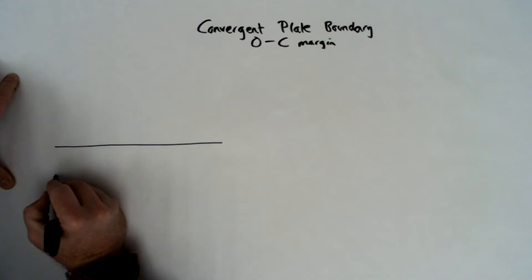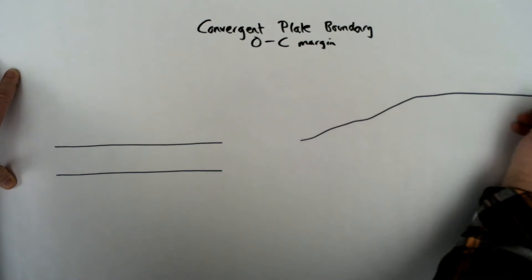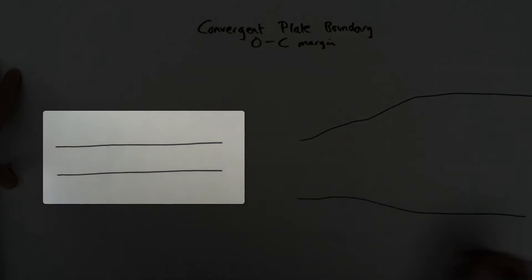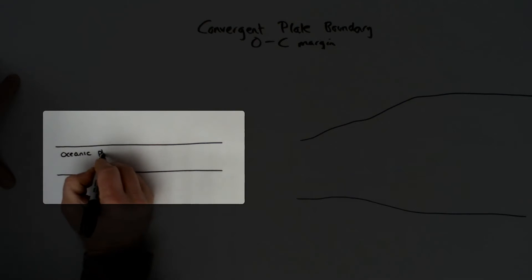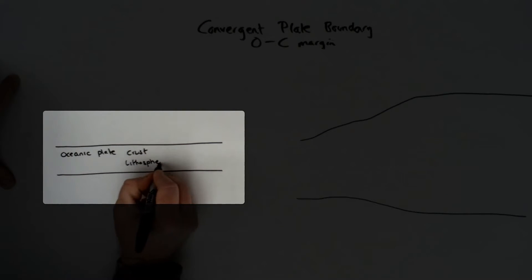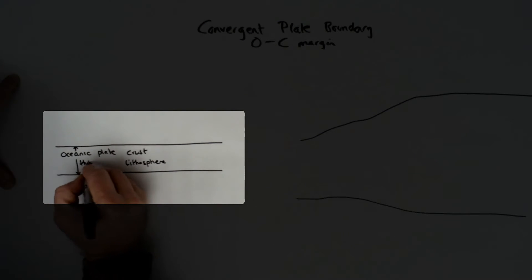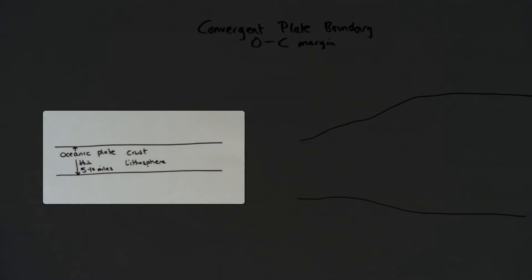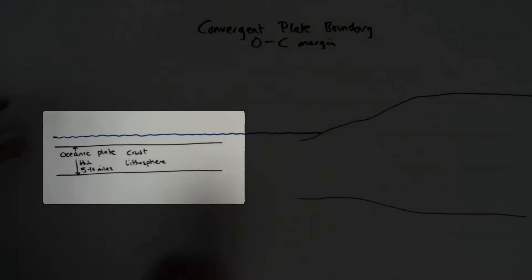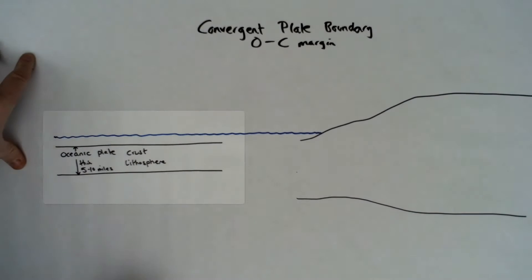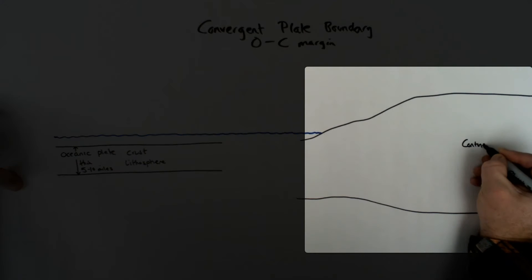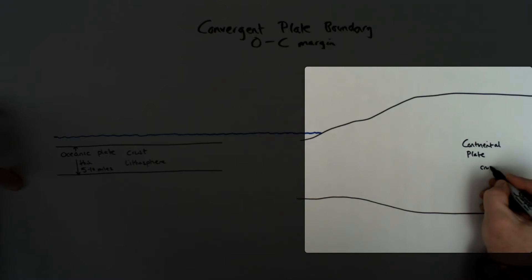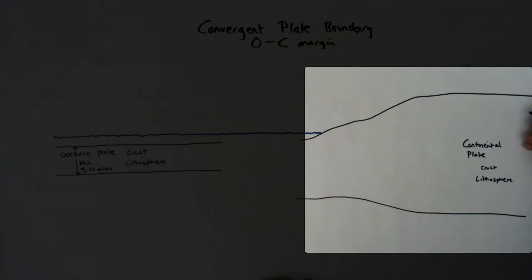This diagram is in the plate tectonics unit. I'm looking at today the convergent plate boundary which is oceanic converging with continental. Now these plates are different and they differ in thickness, composition, and density. This creates certain processes and features that occur at this boundary. The ocean plate is thinner, made of the crust and lithosphere. The continental plate is thicker, again made of crust and lithosphere.